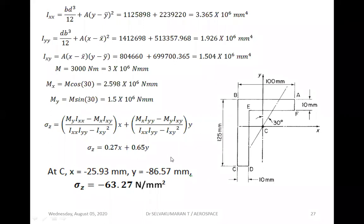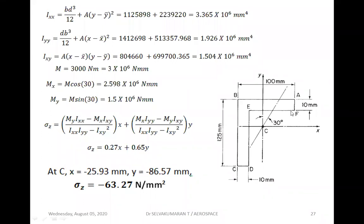Sometimes the problem may ask you to calculate the stress at all points — at B, A, and so on. If you don't have a clear idea where maximum bending stress occurs, it is better to calculate at all corner points. By examining the sense and magnitude of the bending moment you can locate the critical point; otherwise, just calculate the coordinates of all corner points, substitute x and y, and pick the maximum direct stress due to bending.